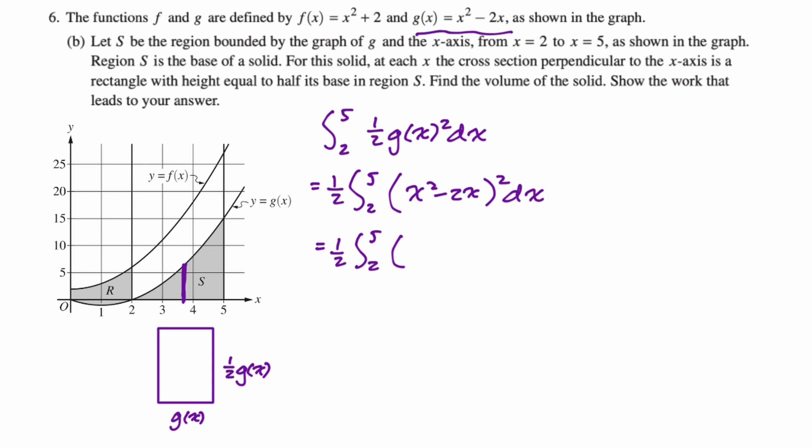We're going to square the first term, that's x⁴. Multiply them together to get negative 2x³, double it, so minus 4x³. Then we're going to square the last term to get 4x². And then dx.